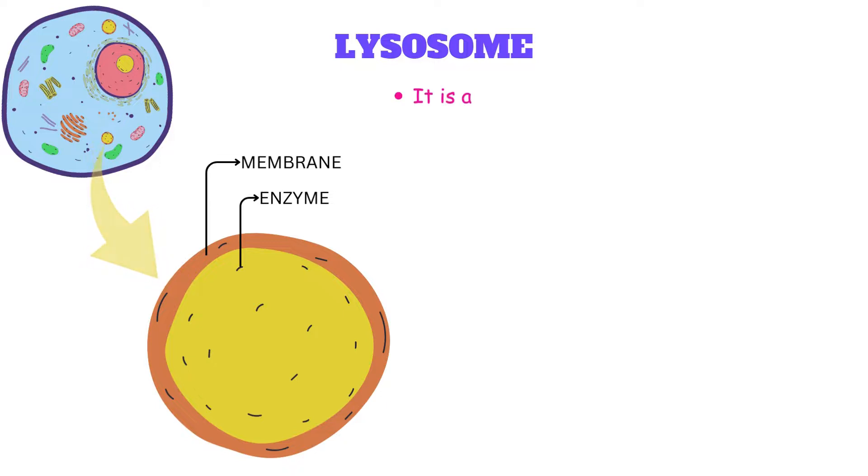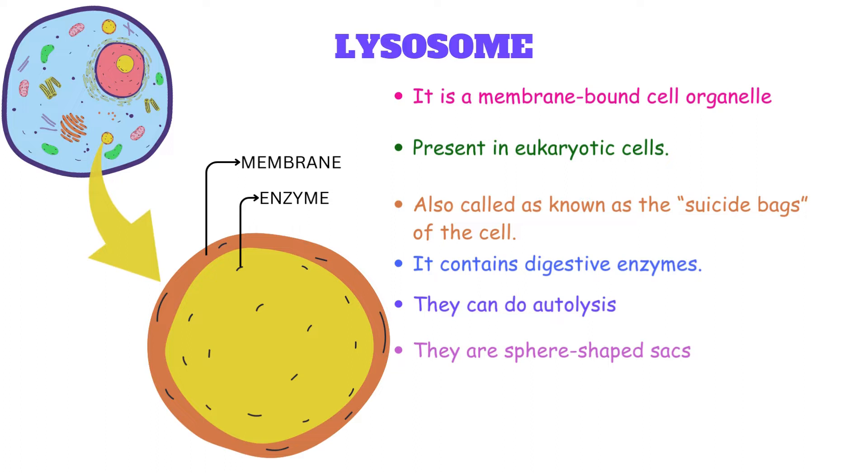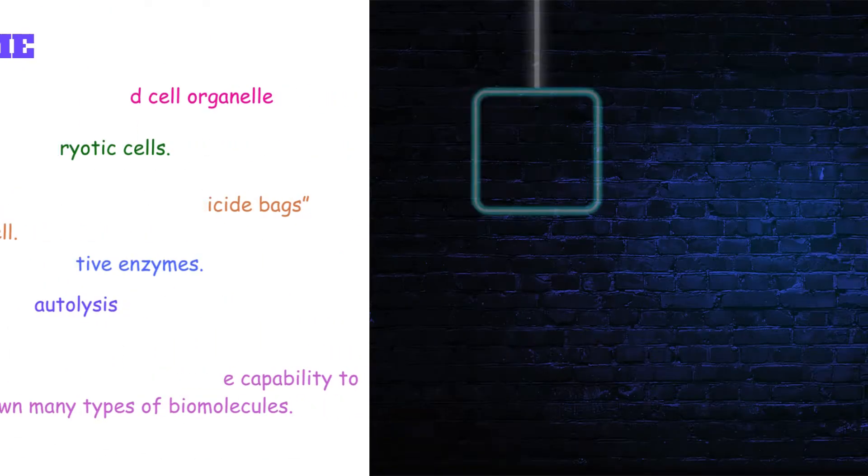Lysosome is a membrane-bound cell organelle present in the eukaryotic cell. It is also called as the suicide bag of the cell because it contains digestive enzymes which can do autolysis. They are sphere-shaped sacs filled with the hydrolytic enzymes that have the capability to break down many types of molecules.